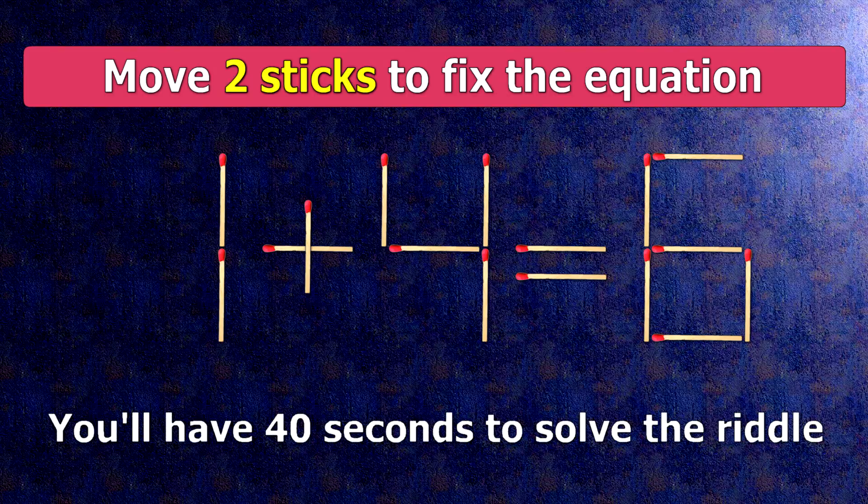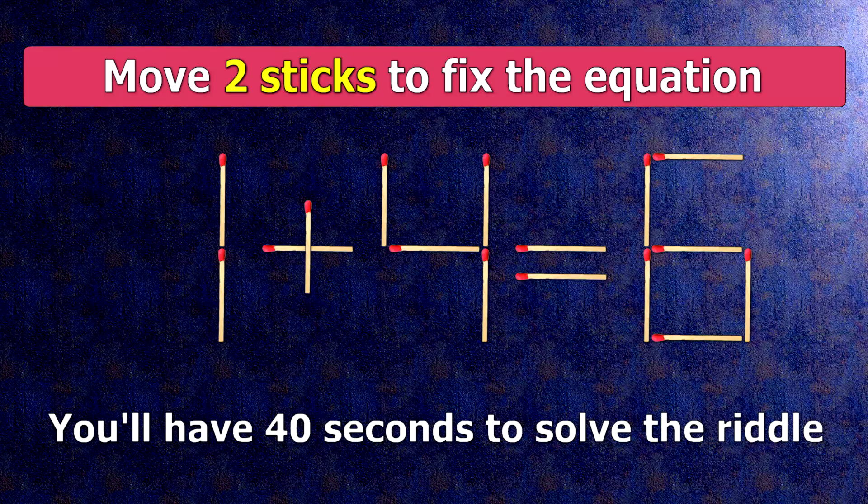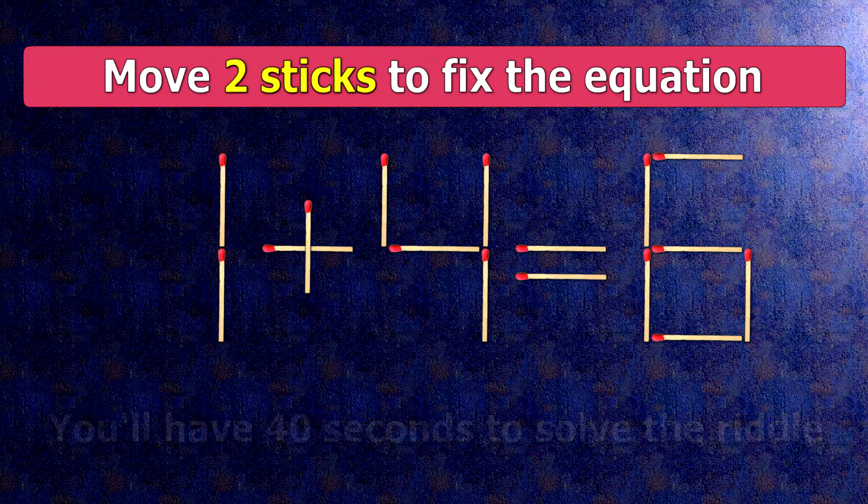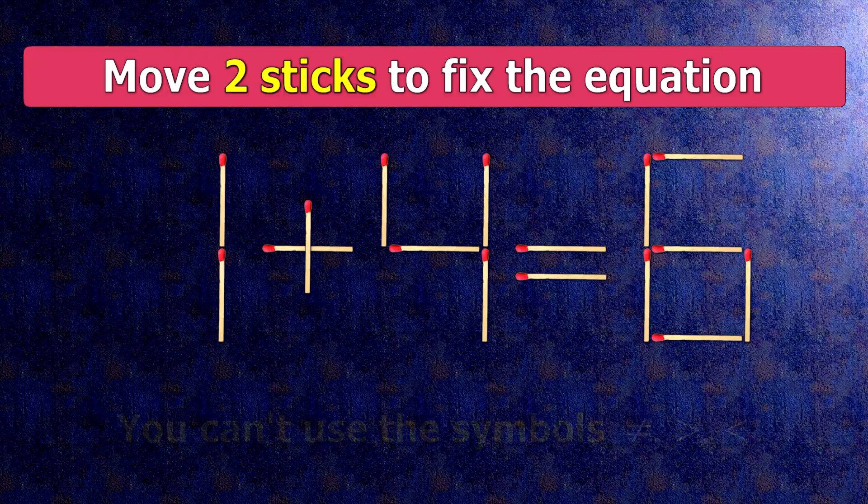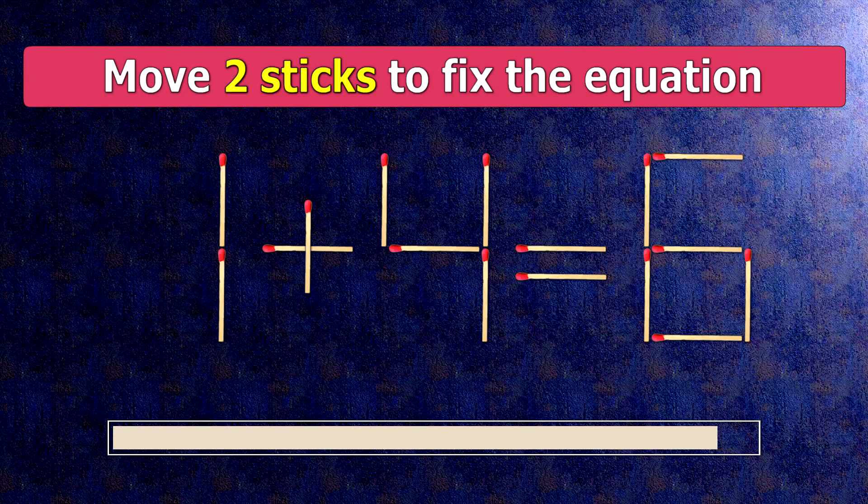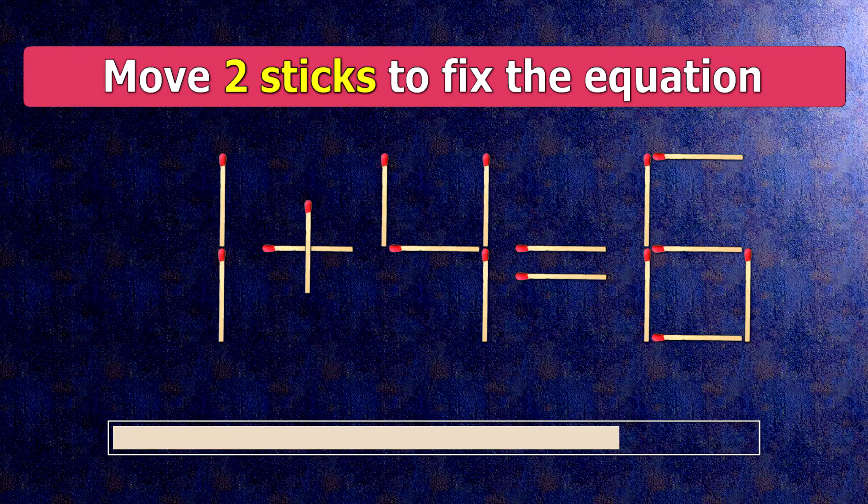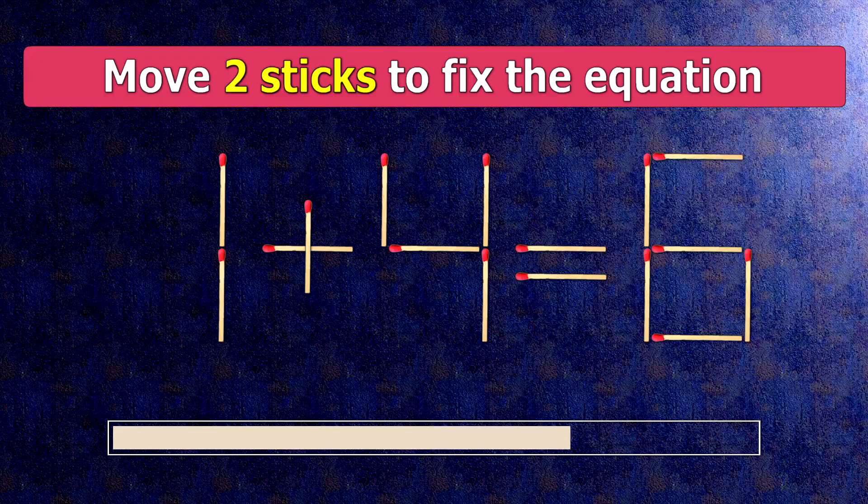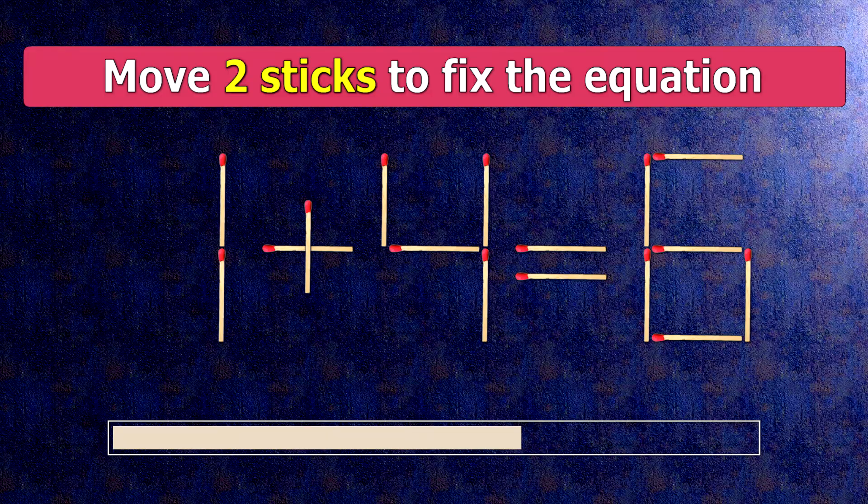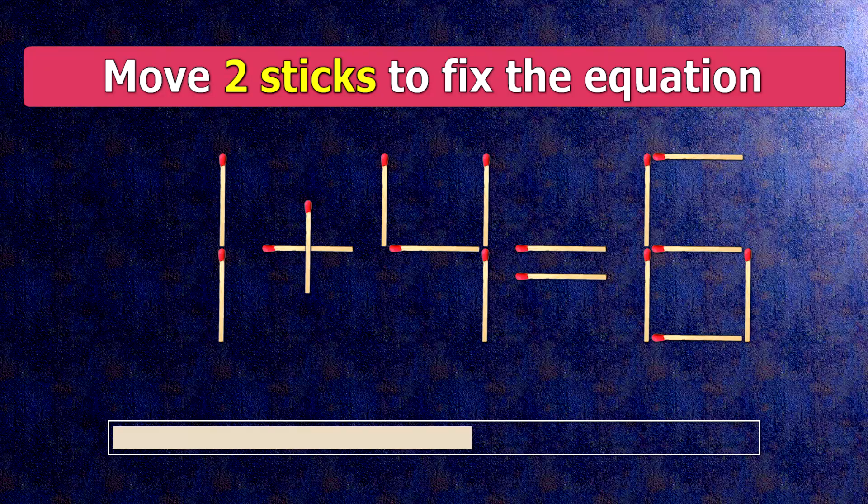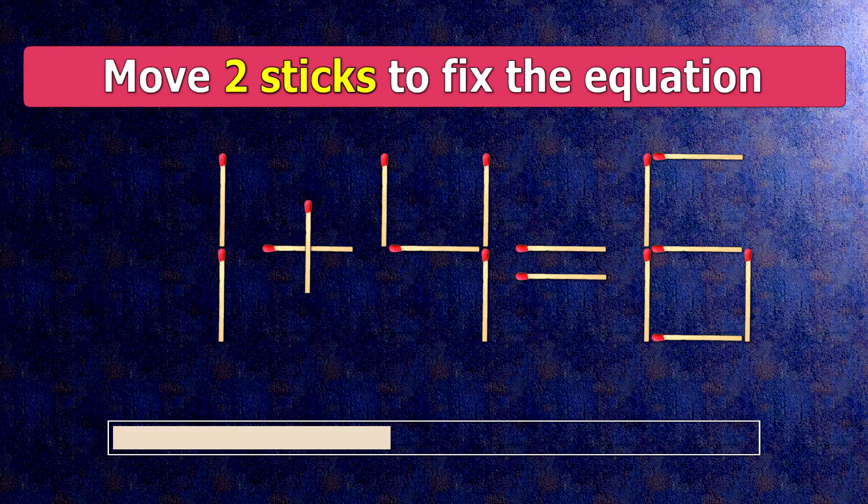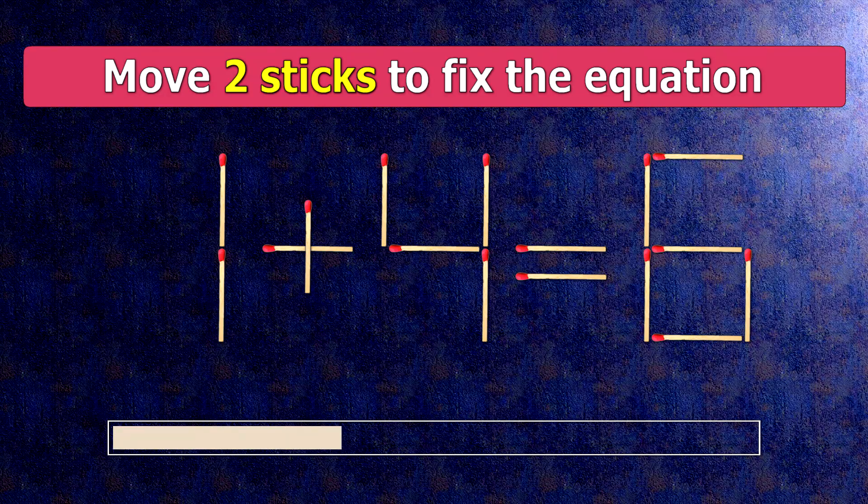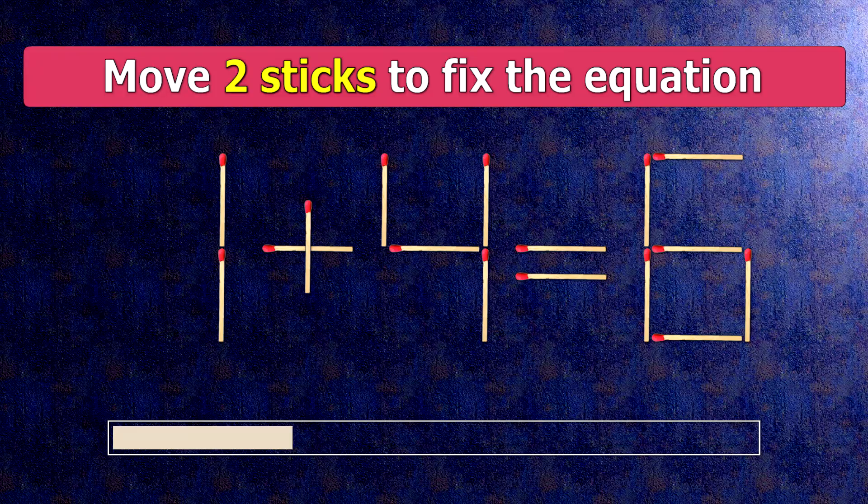We have the equality 1 plus 4 equals 6. Our equality is wrong. We need to move two matches to make our equality correct.